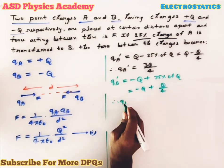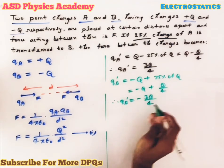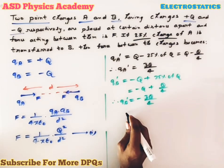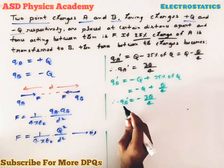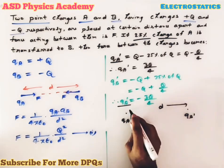Hence qb' = -3q/4. Now again these two charges qa' and qb' are placed, nothing is given, that means distance will be same again.